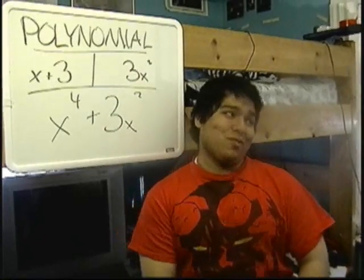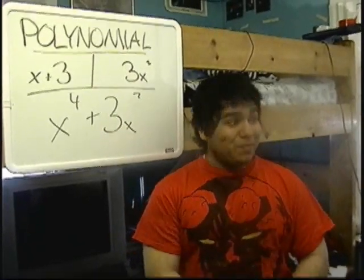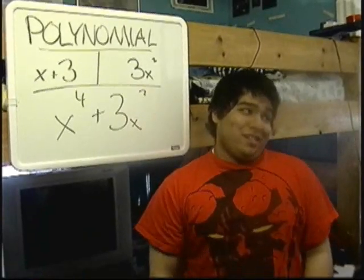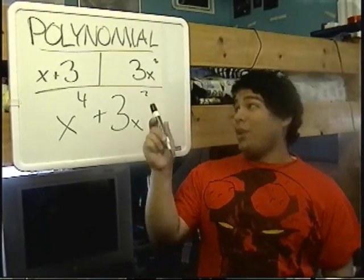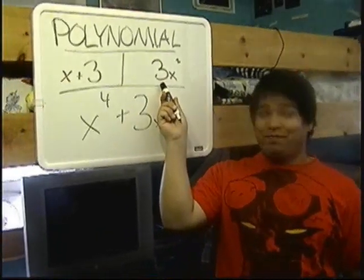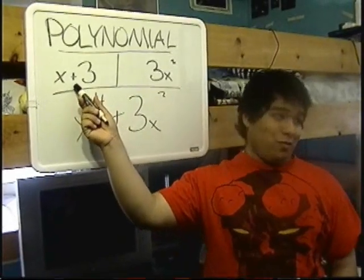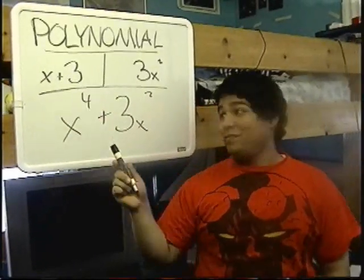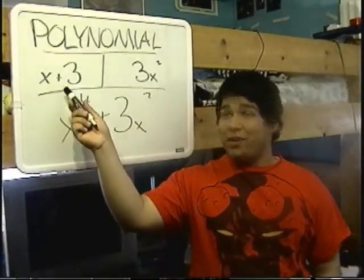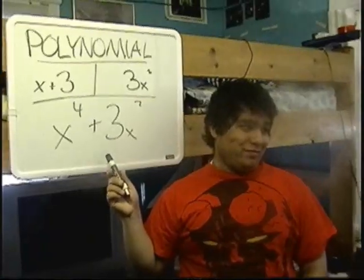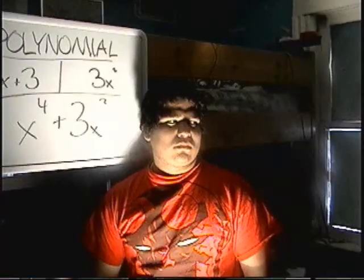The next word is polynomial, which is a monomial or the sum of monomials, like the example shown here. A student mishears 'sum' as 'ski,' and the professor corrects them: 'No, fool. I said sum.'